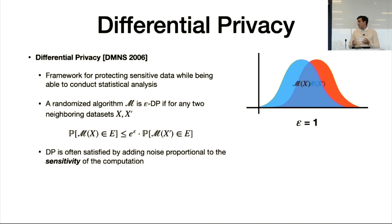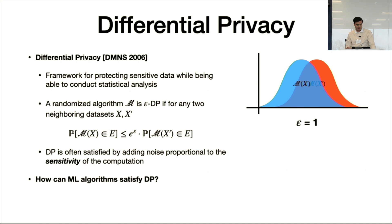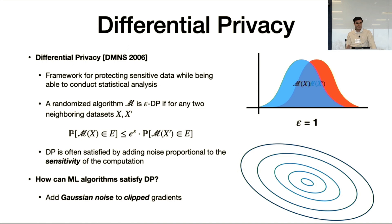We typically satisfy differential privacy by adding noise proportional to the sensitivity of the computation — the maximum possible scale of any individual's contribution. For machine learning, this is done via a variant of gradient descent: we clip gradients to have a bounded norm, then add Gaussian noise to blur the contribution. We repeat this over and over until convergence. There is an inherent trade-off between privacy and utility when adding this noise.